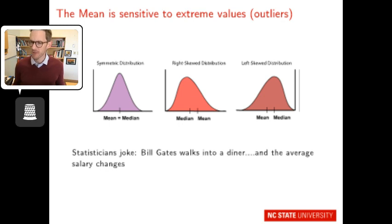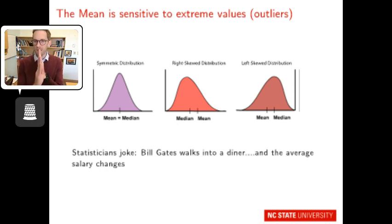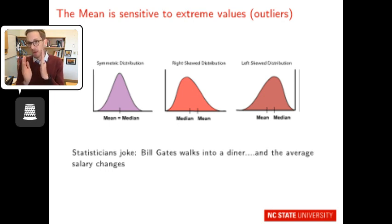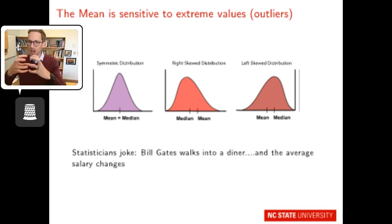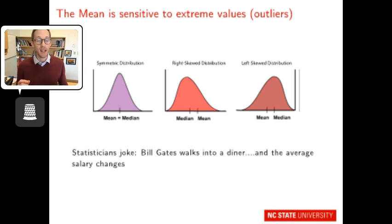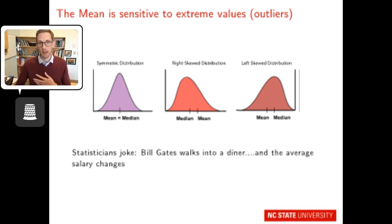The mean is sensitive to extreme values or outliers. With a symmetrical distribution, the mean and median are at the exact same spot. With a right-skewed distribution — more outliers on the right — the mean gets pulled to the right. With a left-skewed distribution, it gets pulled left. The statistician's joke captures this well: Bill Gates walks into a diner and the average salary changes. If our class computed average income and Bill Gates walked in, the mean would make us all seem quite rich because it's so sensitive to his extreme salary.